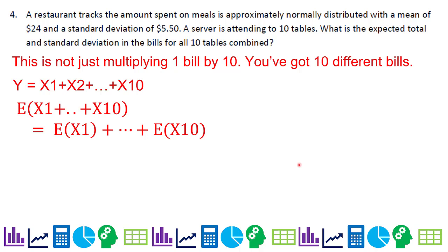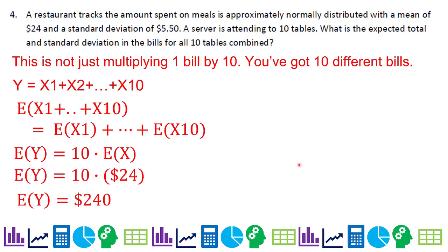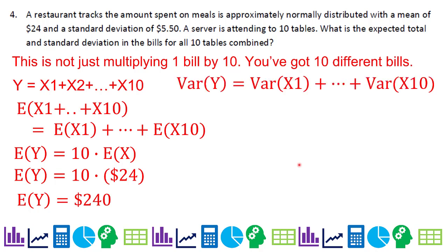The expected value of the sum of bill one through bill ten equals the sum of the individual expected values — bill one through bill ten — so it does feel like multiplying, and it is. The expected value behaves nicely. For standard deviation, however, we add variances: variance of x1 through variance of x10, which is 10 times the variance, since all variances are the same.